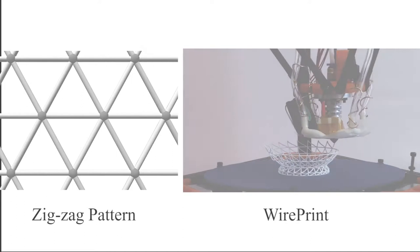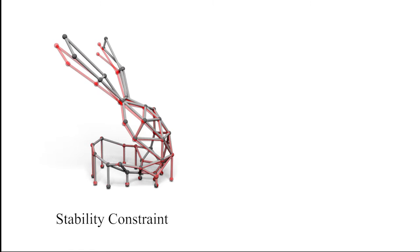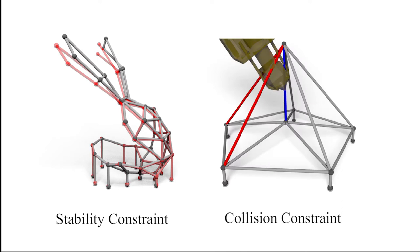However, it is non-trivial to fabricate general frame shapes with complicated structures. First, the existing printed part should be in a static equilibrium state with small deflection. Second, the extrusion head should avoid collision with the existing printed part.